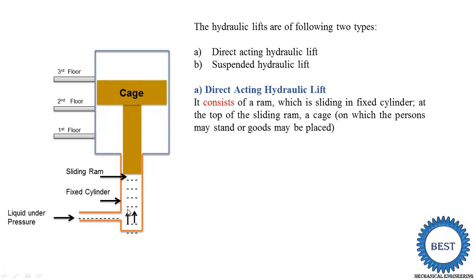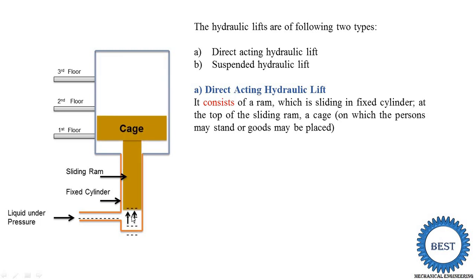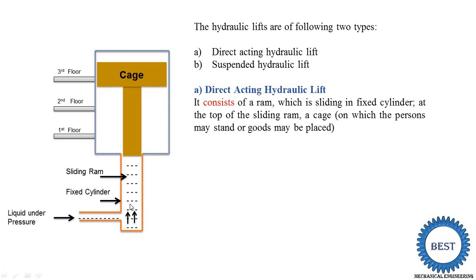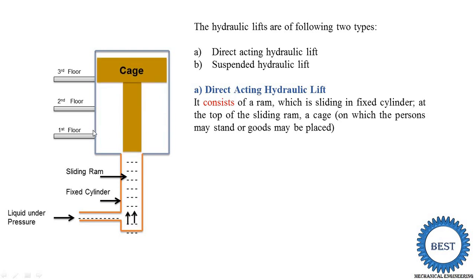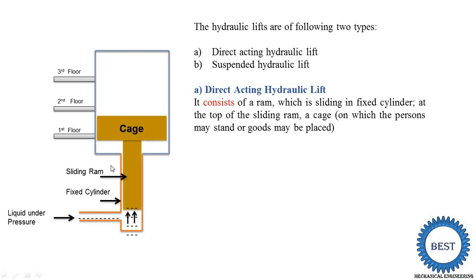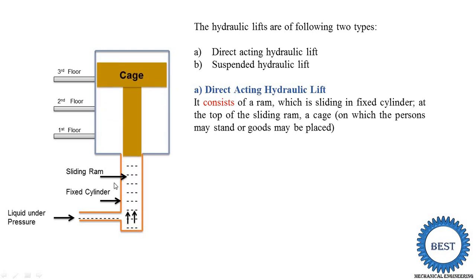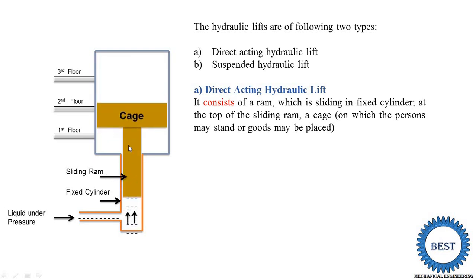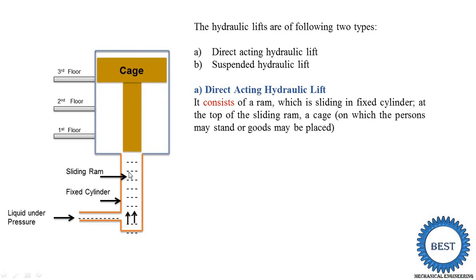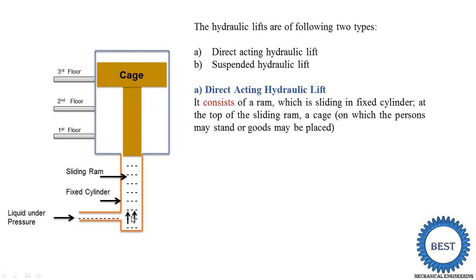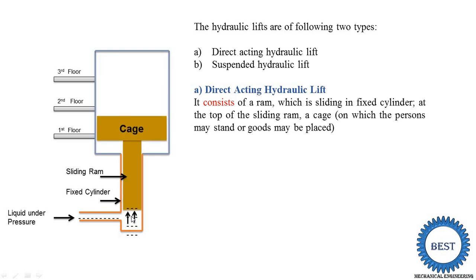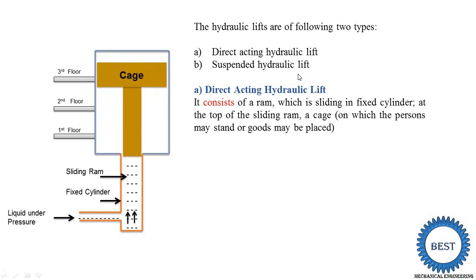Now, here is the working. The liquid under pressure enters here and applies pressure on the sliding ramp, and the sliding ramp starts to move in the upper direction — that is why you move from the first floor to the second floor. This is the working of the direct acting hydraulic lift. The disadvantage of this direct acting hydraulic lift is that you require a longer sliding ramp. If you want to install the lift for a fourth floor, you also require the depth of the cylinder down to the fourth floor. So this ramp is generally not used in any type of building; we generally use the suspended hydraulic lift.